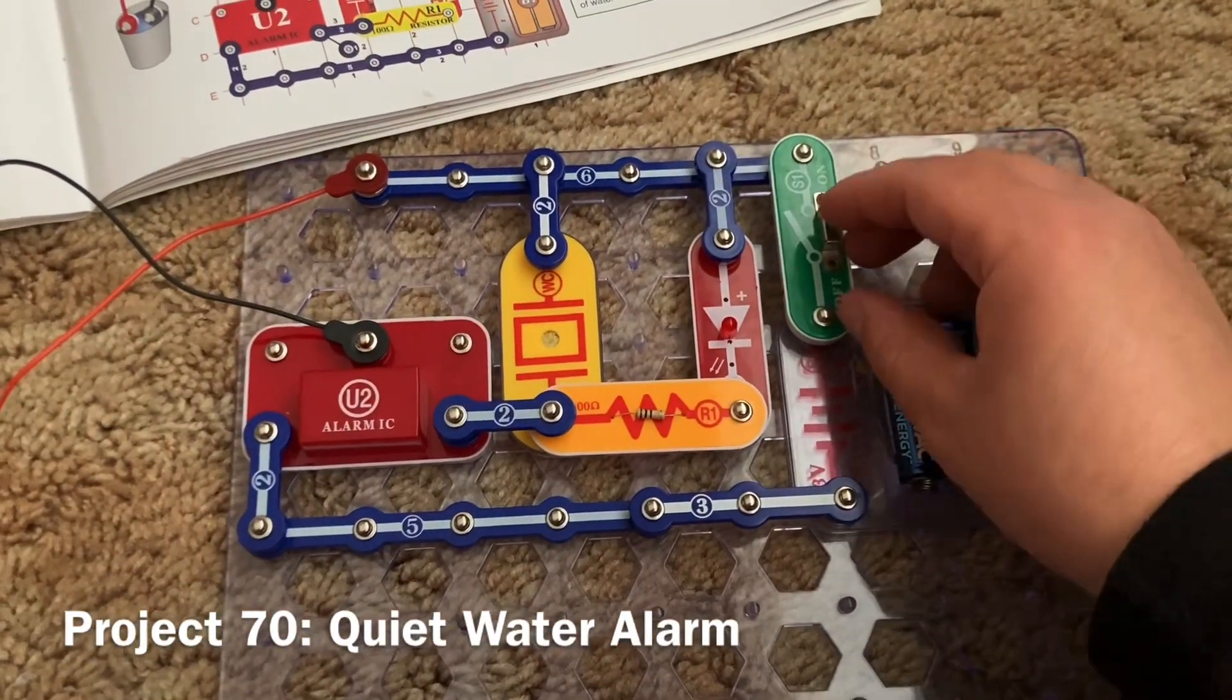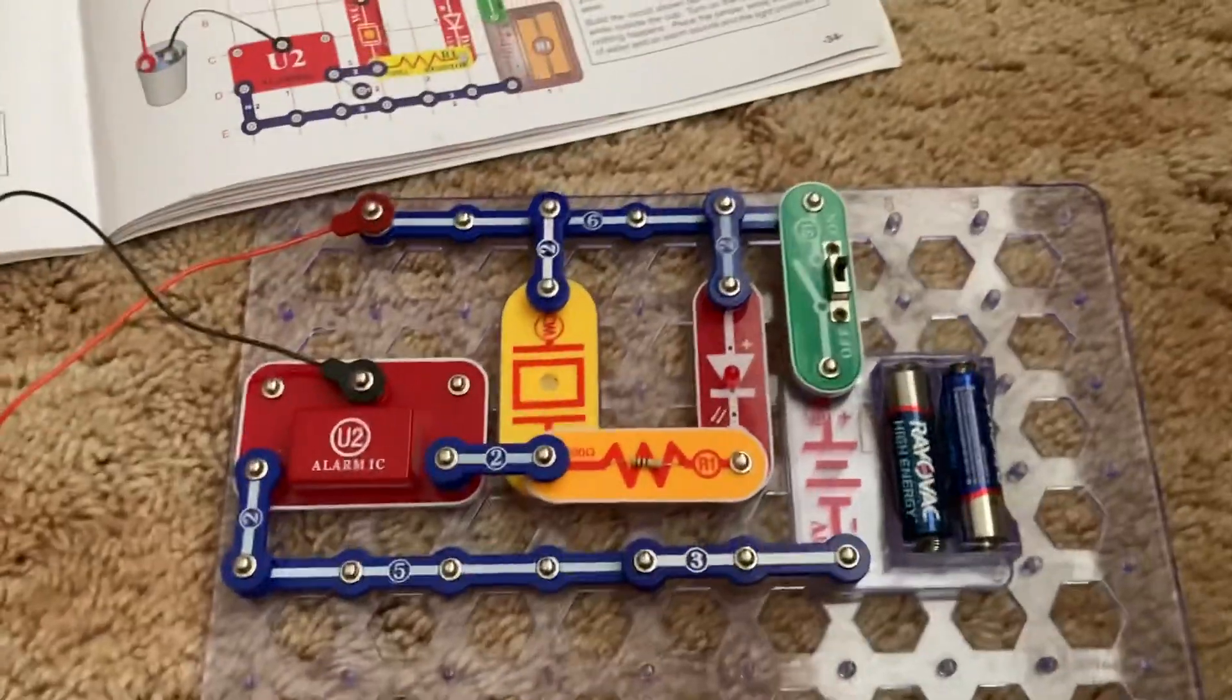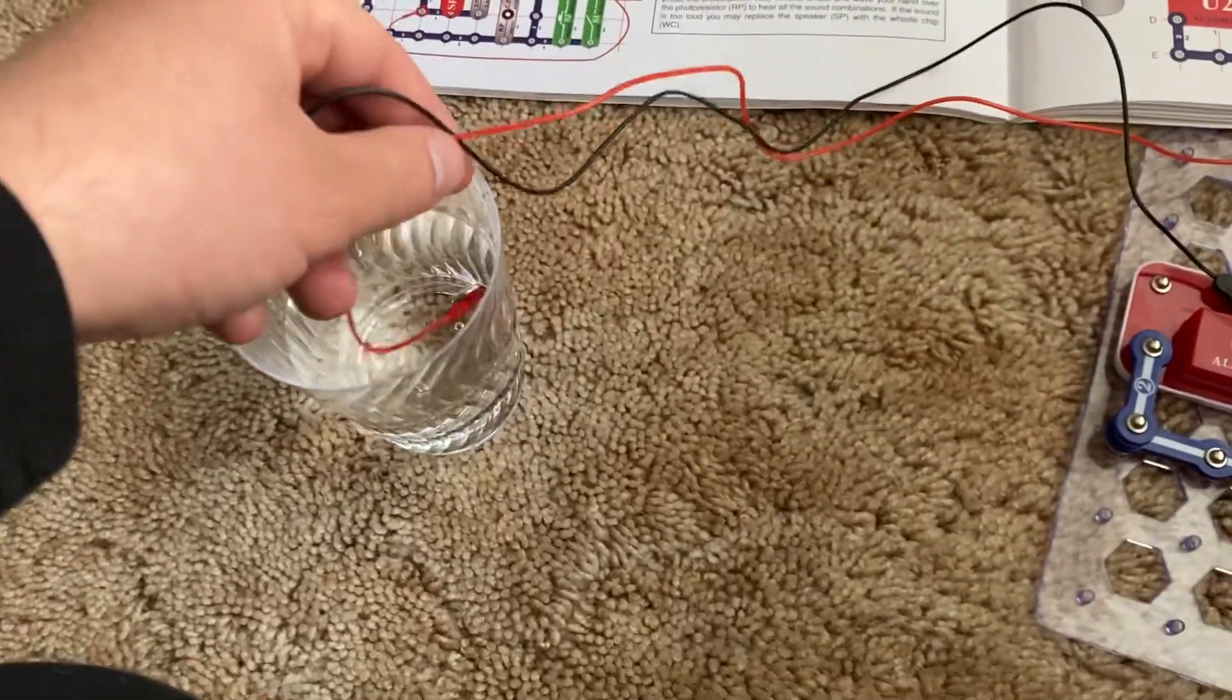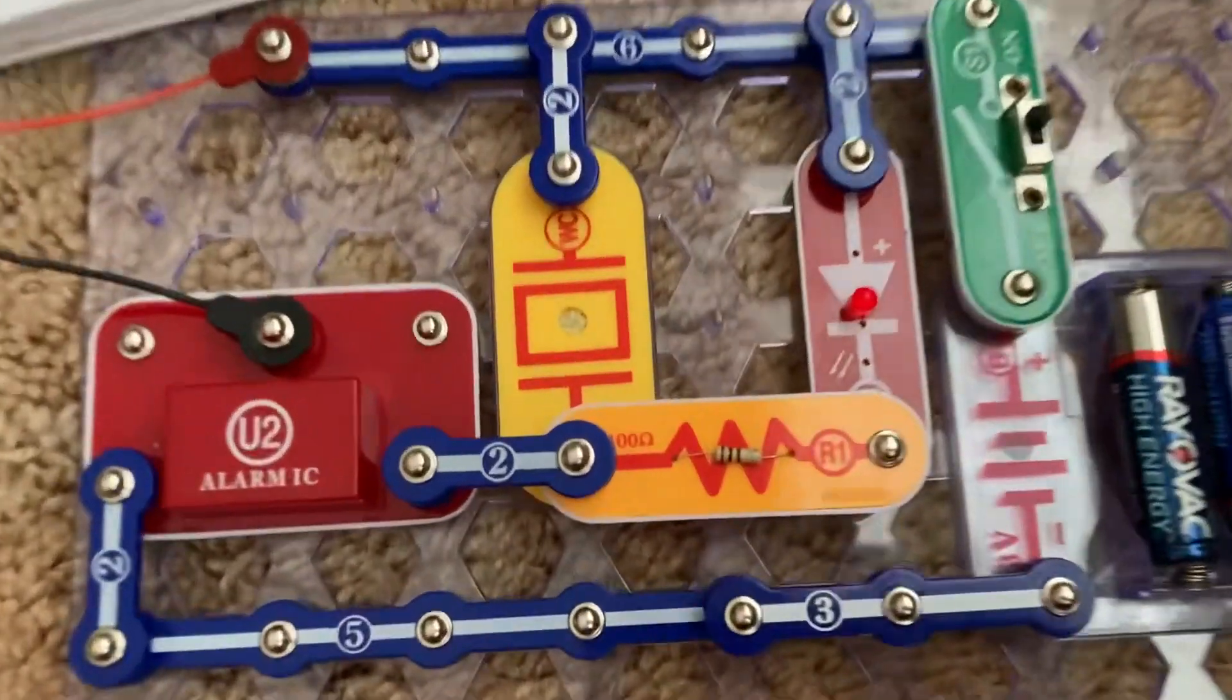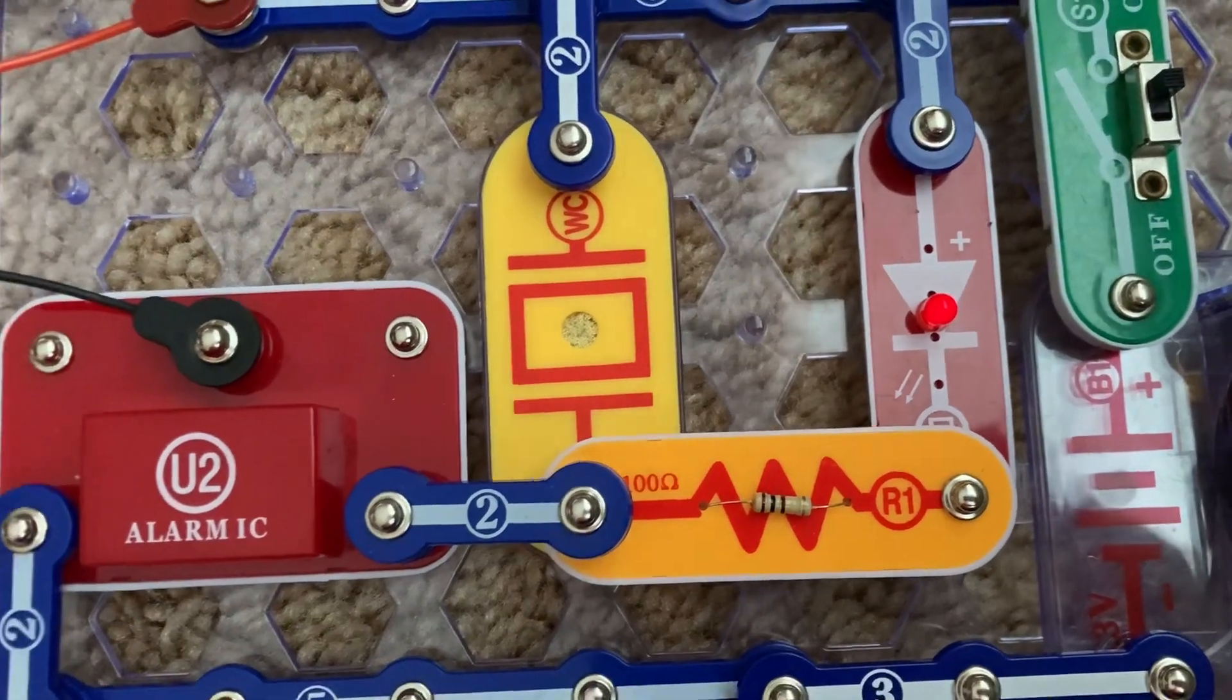Project 70 is quiet water alarm. After I turn on the switch, I'm going to put the jumper, the ends of the jumper wires inside this cup of water. And you will hear a quiet buzzing sound and the red LED flickers.